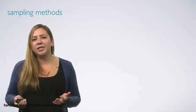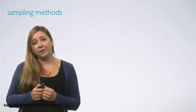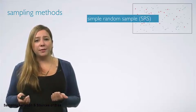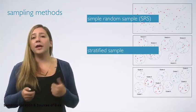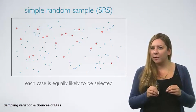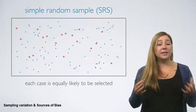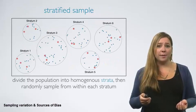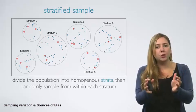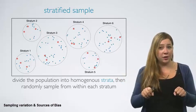Now that we have a good idea of why we might want to sample and why it's important for our sample to be representative of the population, let's discuss some sampling methods — namely simple random sampling, stratified sampling, and cluster sampling. In simple random sampling, we randomly select cases from the population such that each case is equally likely to be selected. This is similar to randomly drawing names from a hat. In stratified sampling, we first divide the population into homogeneous groups called strata, and then we randomly sample from within each one of these strata.